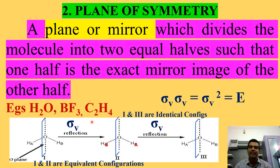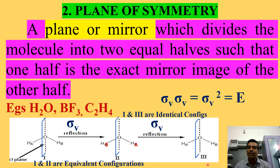After another sigma v reflection operation, A comes back to this side and B comes back to this side, so configurations one and three are identical — one and three are the same. Configurations one and two are equivalent, whereas one and three are identical. Therefore, sigma v squared gives the identity operation — we have done nothing net. The product of two sigma v operations gives the identity operation.